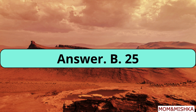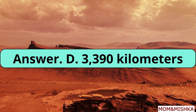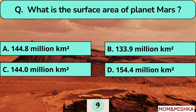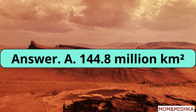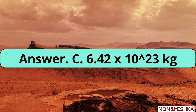The radius of Mars is 3,390 kilometers. The surface area of Mars is 144.8 million square kilometers. The mass of Mars is 6.42 × 10²³ kg.